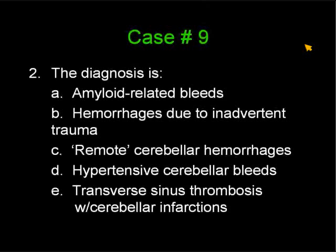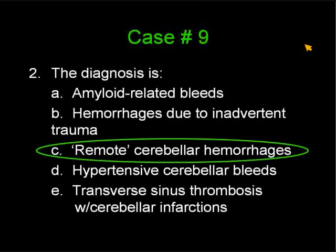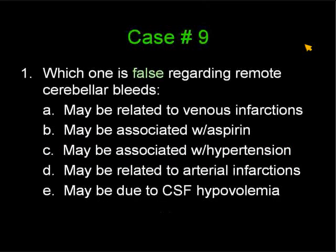The majority of you said thrombosis of the venous sinus. The correct answer is C, remote cerebellar hemorrhages, chosen by 25%. The findings are typical for the so-called remote cerebellar hemorrhages. Ann Osborne's new book has some beautiful cases, and they've also been described extensively in the literature — including a nice article from the group in Salt Lake City earlier this year in the AJNR.